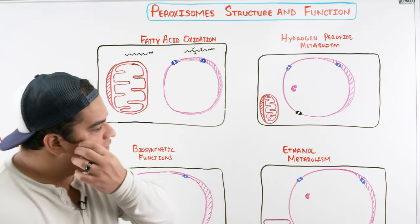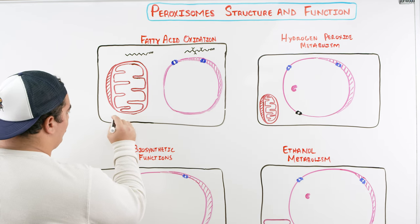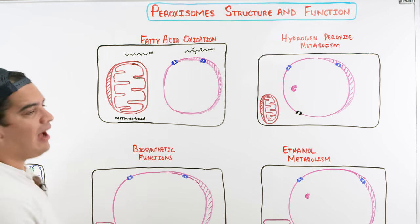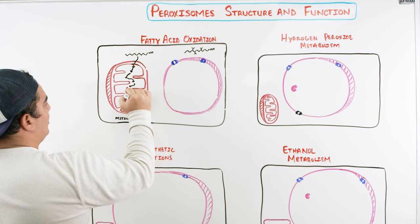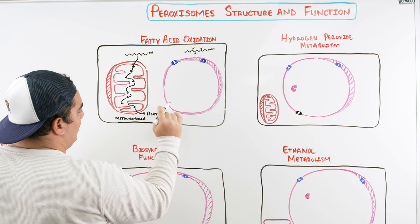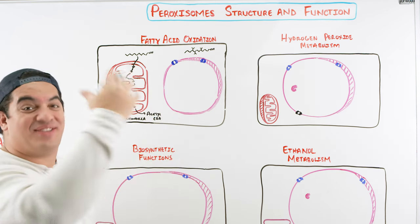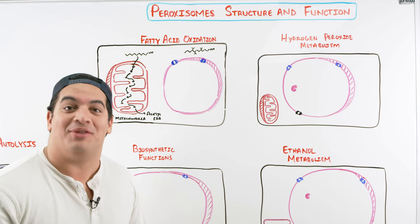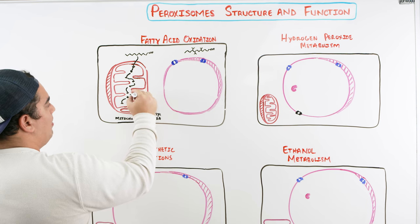First one: fatty acid oxidation. Fatty acids can naturally be metabolized by the mitochondria through a process called beta oxidation. We take a fatty acid into the mitochondria, it goes through oxidation, hydration, and thiolation, and you make something called acetyl-CoA. That acetyl-CoA generally goes through the Krebs cycle, generating NADHs and FADH2s, which are utilized in the electron transport chain to make ATP. This whole process of taking a fatty acid and making acetyl-CoA is called beta oxidation.